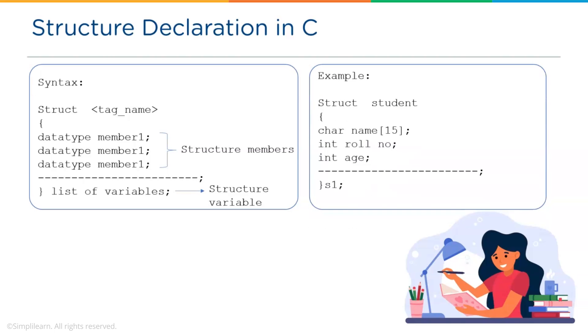Now let's see the example. We have struct keyword followed by student as a tag name, then a list of structure members. And they are name of type char, roll number and age of type int and s1 as a structure variable. We can have a list of structure variables.